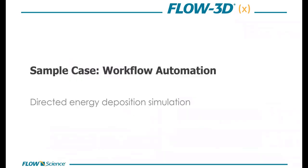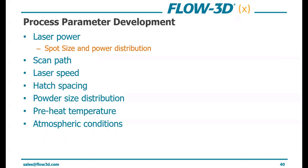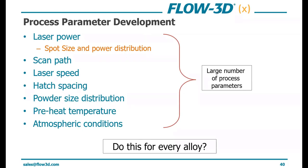Now let's go into some examples showing how to actually use this tool. We'll start with a workflow automation case of a directed energy deposition simulation. Here we're comparing different scan tracks and scan speeds to identify a process window for a proper melt pool composition. The matrix compares different power and speed combinations, and the experimental data highlights areas of porosity defects. Our goal is to use CFD to figure out appropriate combinations of speed and power — there are many variables that influence process parameter development: laser power, scan path, laser speed, hatch spacing, powder size distribution, preheat temperature, and atmospheric conditions.